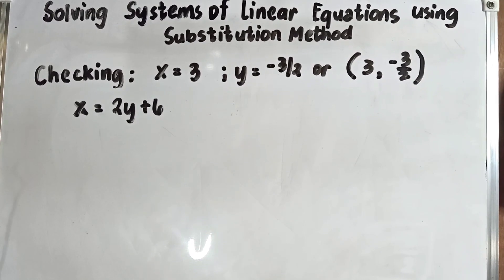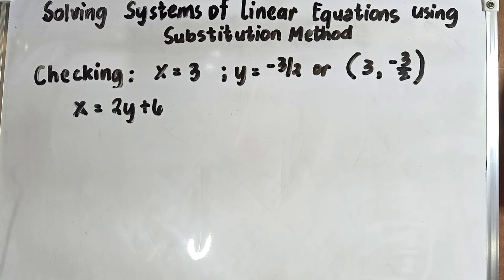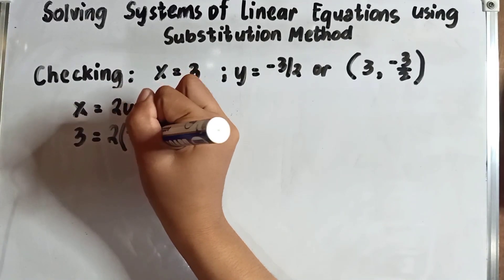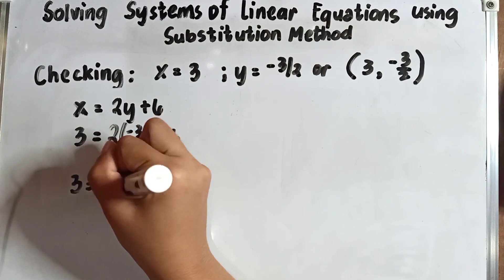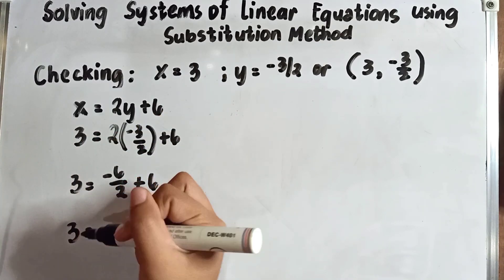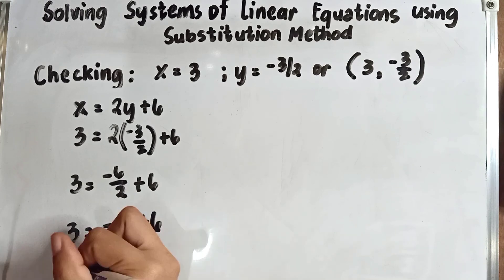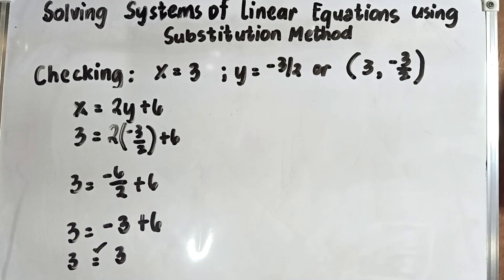Let's check our answers. Using the new equation 1, x equals 2y plus 6: substituting x equals 3 and y equals negative 3 over 2, we get 3 equals 2 times negative 3 over 2 plus 6. That simplifies to 3 equals negative 6 over 2 plus 6, which is negative 3 plus 6, giving 3 equals 3. The answer checks out for equation 1.